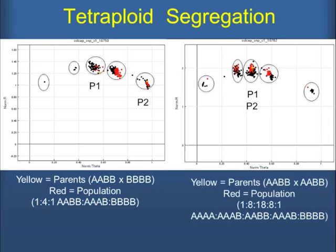In the diploids, everything was based on a three-cluster call. Candy has gone through SNP by SNP and she's also doing it now from a tetraploid point of view. What you can see here are screenshots from Genome Studio.